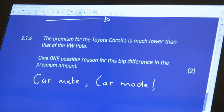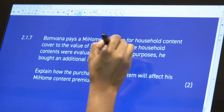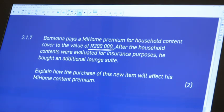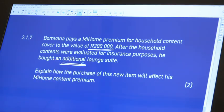Question 2.1.7: Bomvana pays a home premium for household content cover for the value of R200,000. After the household contents were evaluated, he bought an additional lounge suit. Explain how the purchase of this new item will affect his home content premium. Additional simply means that the premium is going to go up. If you buy something additional, it's going to cost you more.